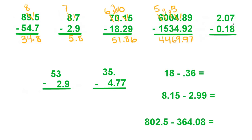Over here we have 7 minus 8 — have to go all the way to the 2. Make that a 1, give it to the 10, cross it out, make it a 9, give it 17. And that's going to be 9. 9 minus 1 is 8. Bring down the decimal point. And 1 minus 0 is 1.